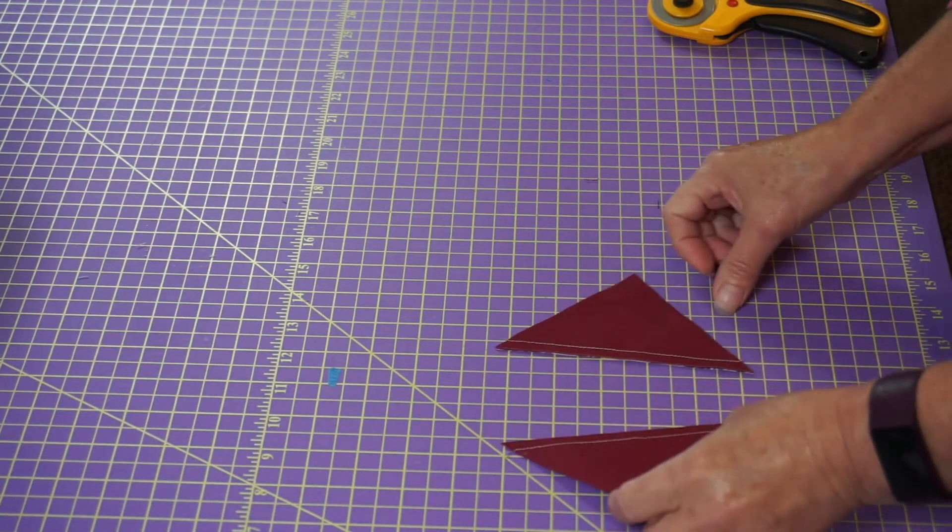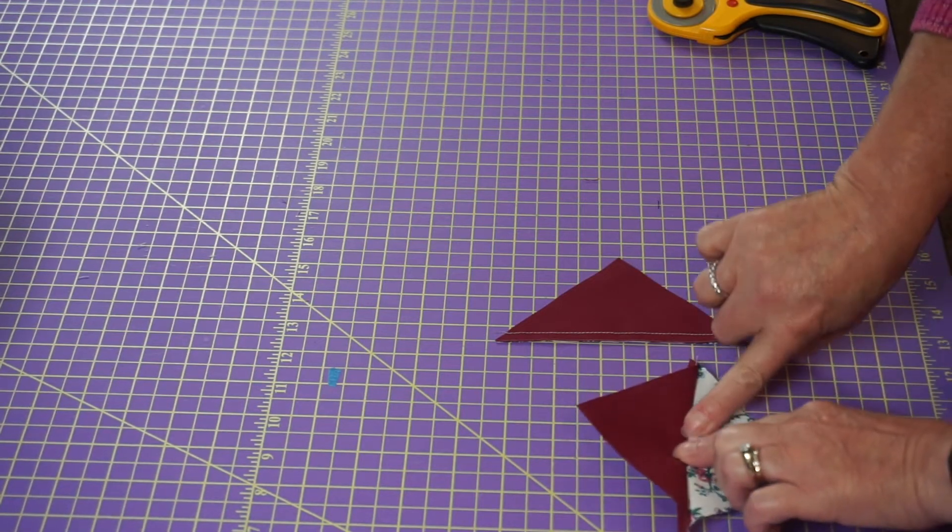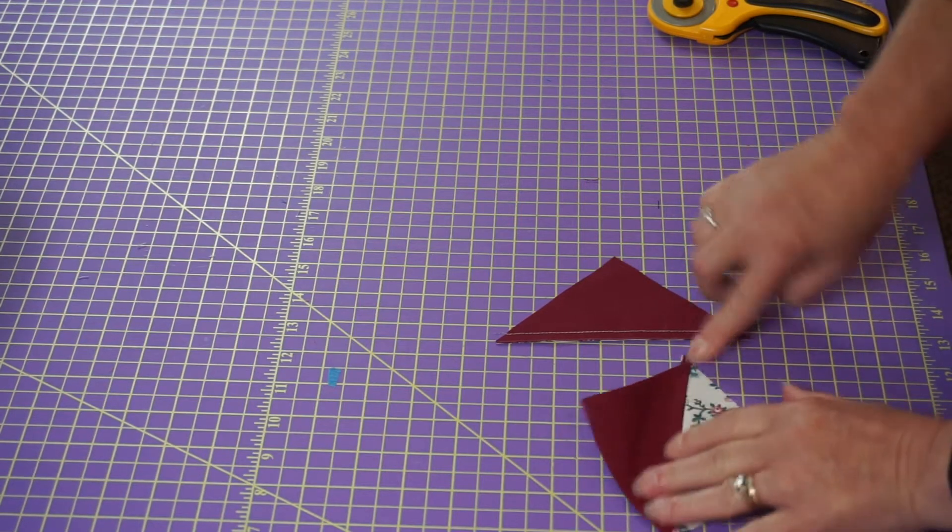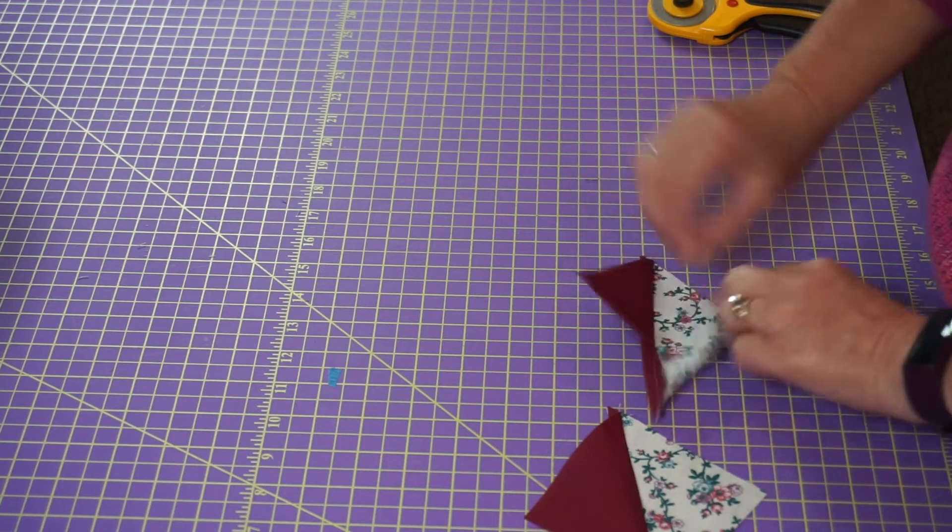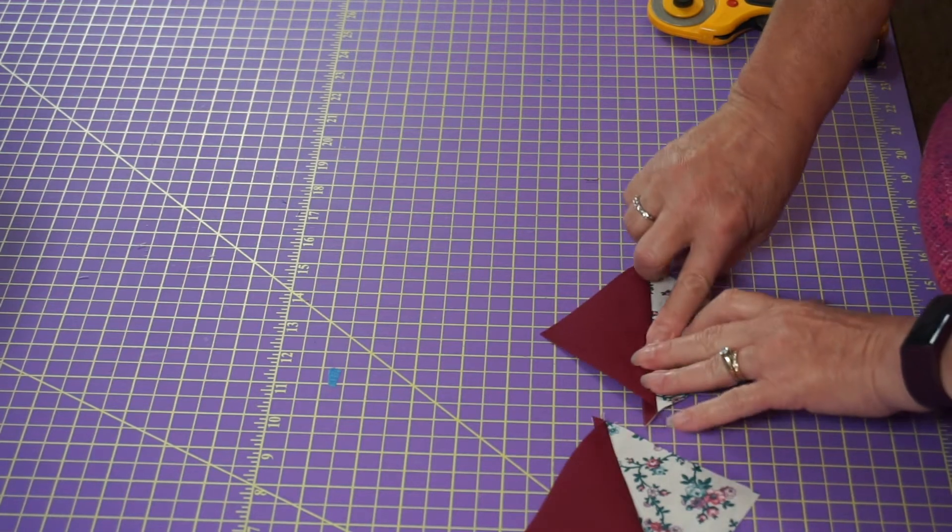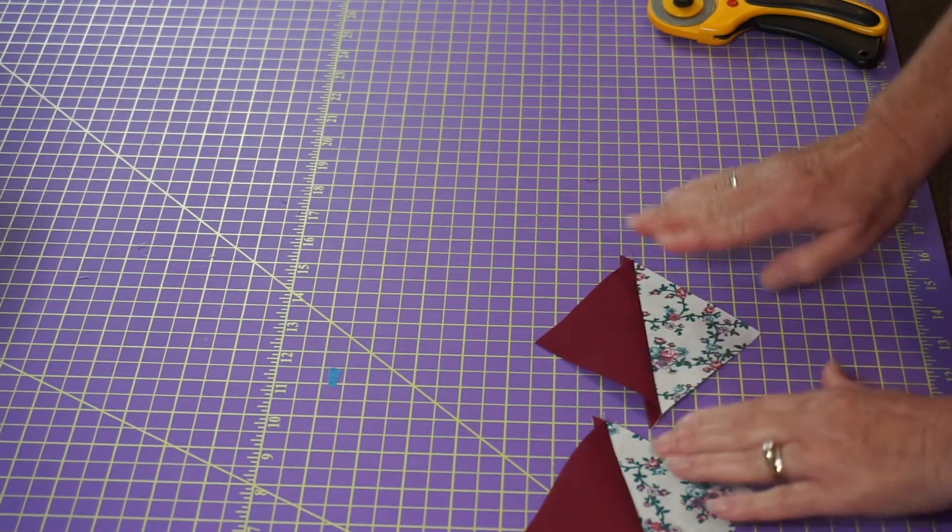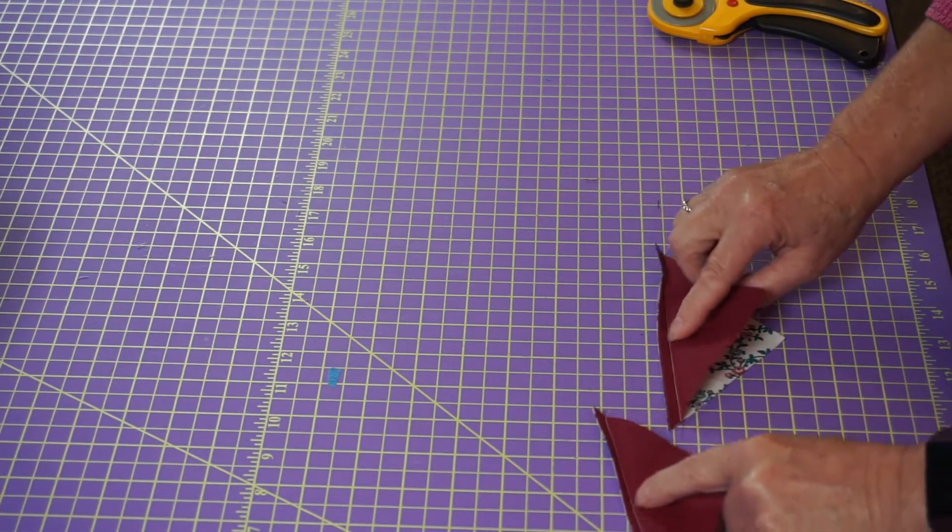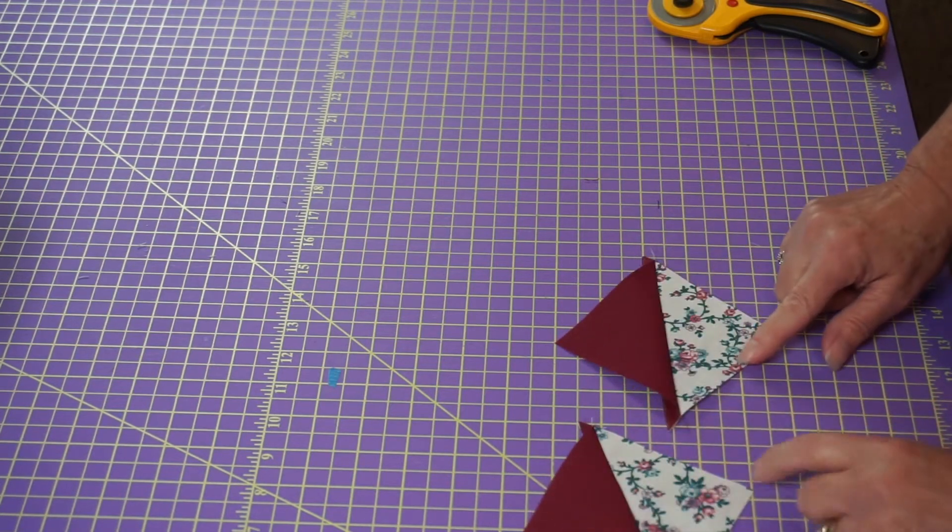And you cut on the line that you drew. And there you go, you have two half square triangles. I always generally press to the dark side, so I'm going to finger press these first.